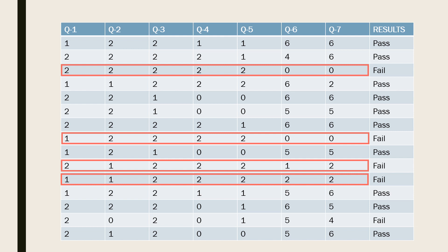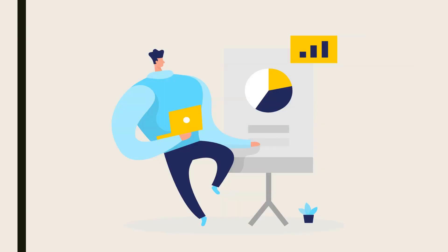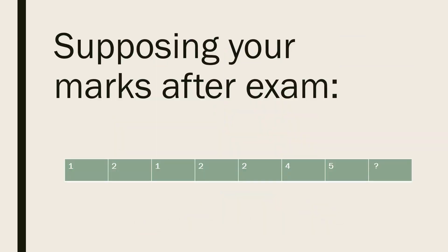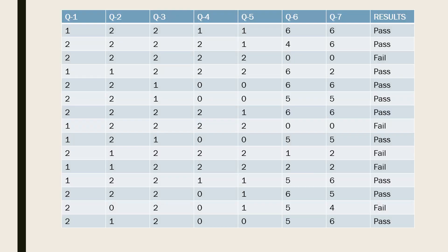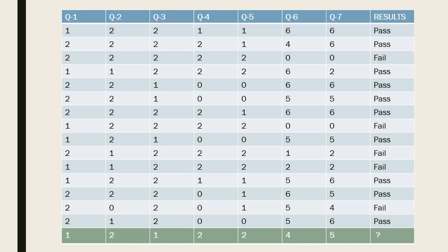Now, after giving the exam, you analyse how many marks you would get in every question. And then, by comparing your possible marks with the dataset you have, you make a calculated guess that either you will pass the exam or not. Here, you are trying to predict your result based on the data you already have. This is known as prediction. In prediction, you are not concerned about how the variables are internally dependent on each other, and the only thing that matters is your predicted output.